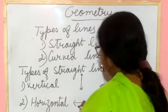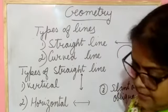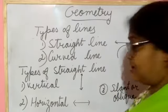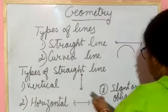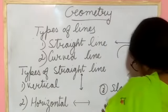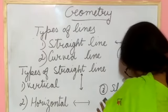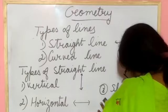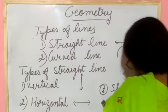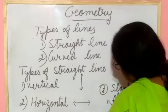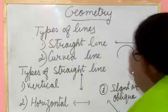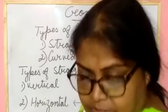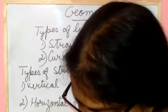Next one is the slanting line or oblique line. If a line is like this way, you can say this one is a slanting line or oblique line.